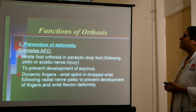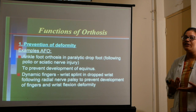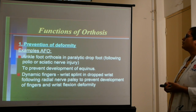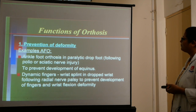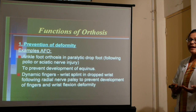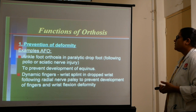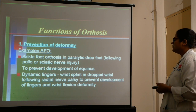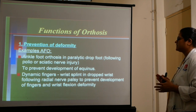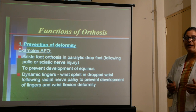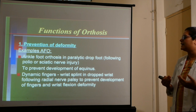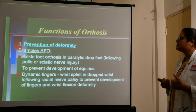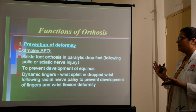The first function of orthosis is preventing deformity. Examples include ankle foot orthosis used in paralytic drop foot following polio and sciatic nerve injury, and a dynamic wrist splint in dropped wrist following radial nerve palsy, to prevent development of finger and wrist flexion deformity. There are many deformities that can develop if orthosis is not used.